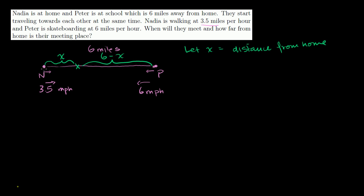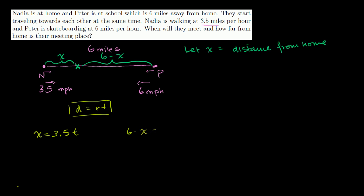They both leave at time 0, and after time t they will meet. Remembering that distance equals rate times time: Nadia's equation is x = 3.5t, since she travels x miles at 3.5 miles per hour. Peter's equation is 6 minus x = 6t, since he travels 6 minus x miles at 6 miles per hour for t hours.